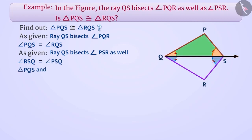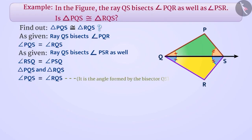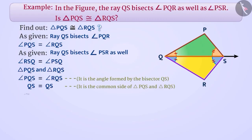Now, in triangle PQS and triangle RQS: angle PQS is equal to angle RQS, since they are the angles formed by the bisector QS. QS is equal to QS, since this is the common side of triangle PQS and triangle RQS. Similarly, angle PSQ is equal to angle RSQ because they are the angles formed by the bisector QS.